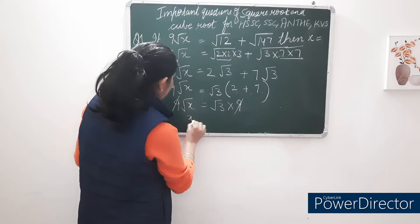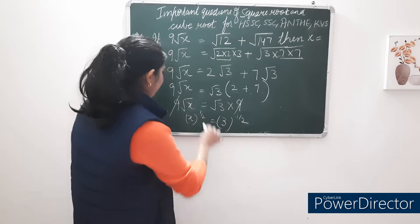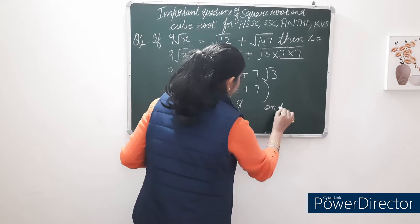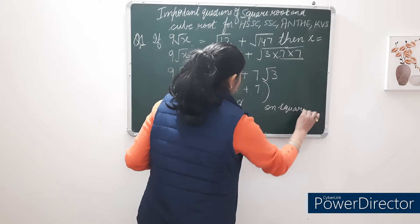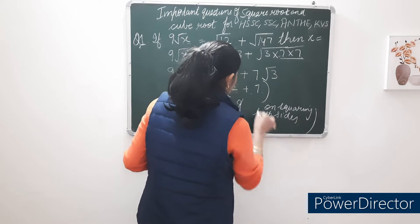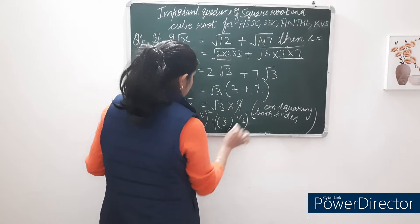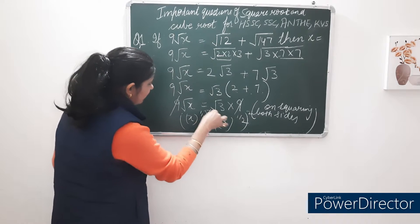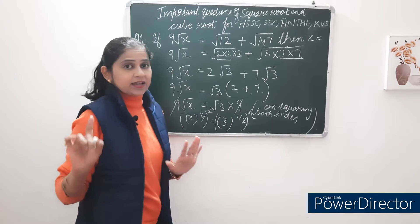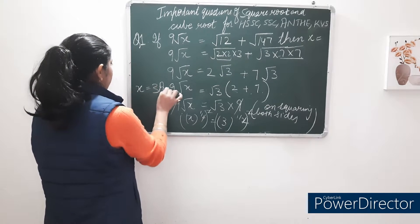The 9 on both sides cancels. So x^(1/2) = 3^(1/2). On squaring both sides, the power 1/2 cancels with the square, and we get x = 3 as the answer.